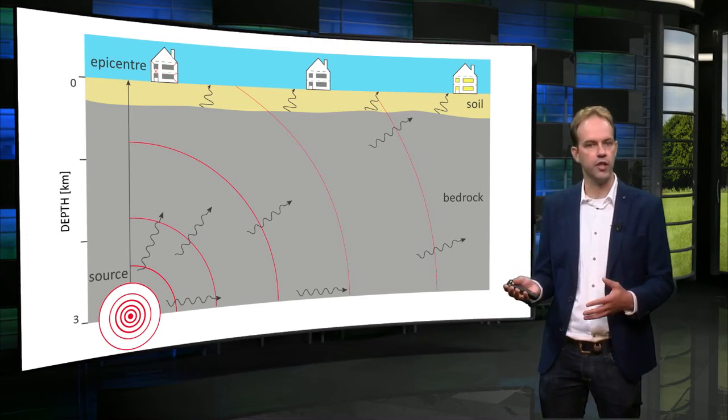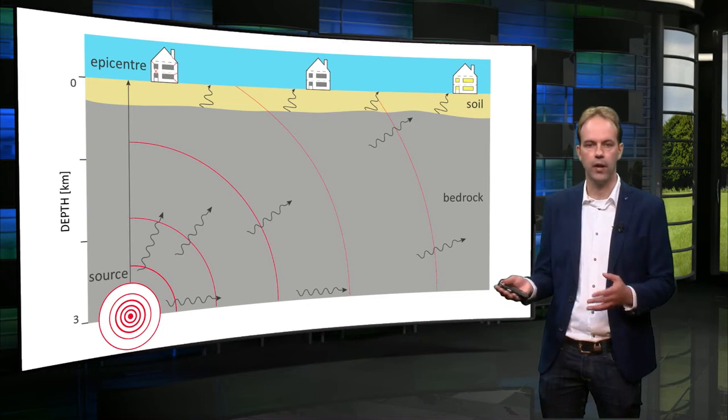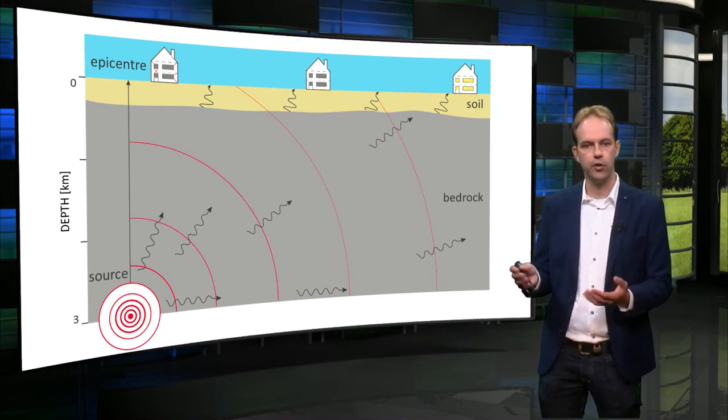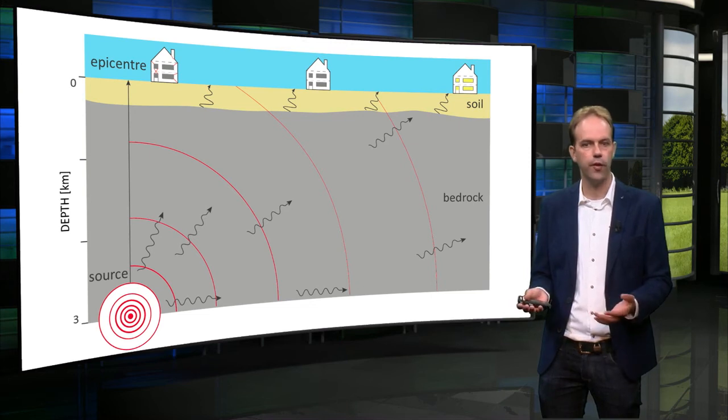The Groninger gas reservoirs are situated at depths of around 3 km. And these cause relatively more damage to the structures at the surface of the earth compared to similar sized, deeper events.